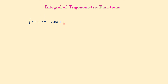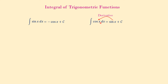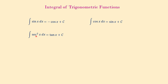The next formula: the integral of cosine of x dx is sine of x plus C. This is true because the derivative of sine of x is cosine of x. The next formula: the integral of secant squared of x dx equals tangent of x plus C, because the derivative of tangent of x is secant squared of x.